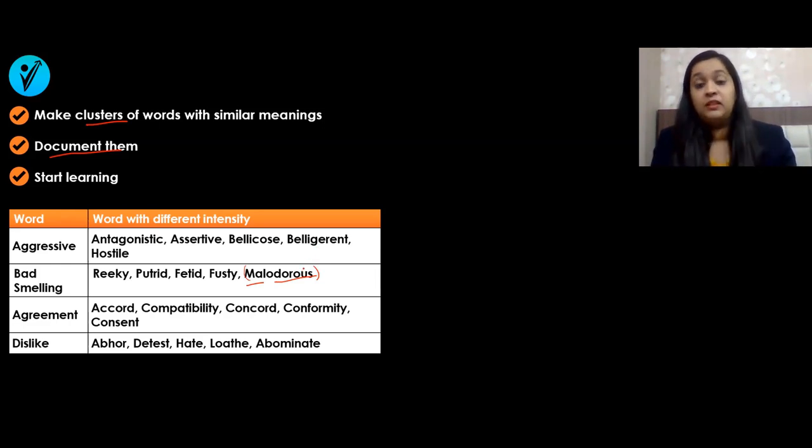Agreement: when you want to agree to something, you have different words—accord, compatibility, concord, conformity, consent. These are all words which mean agreement. Try and make sentences with them, use them in your daily conversations. It will really help you understand the meaning or context of how each word should be used.